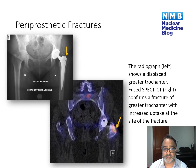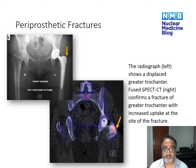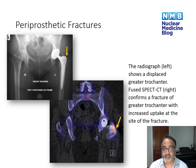SPECT CT is very useful at picking up periprosthetic fractures. As shown here on the plain film, a fracture of the greater trochanter was missed. On the SPECT CT, there is clearly increased uptake at the fracture site, in keeping with non-union.